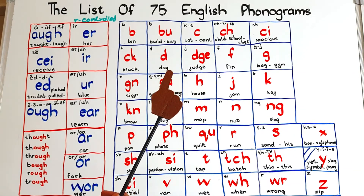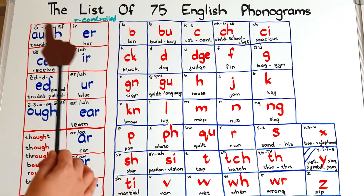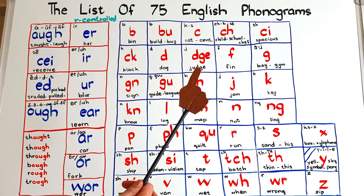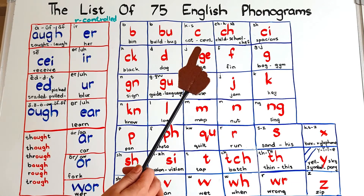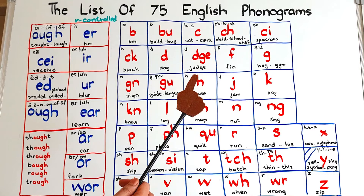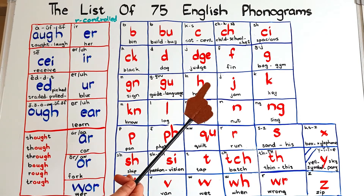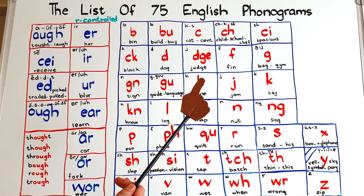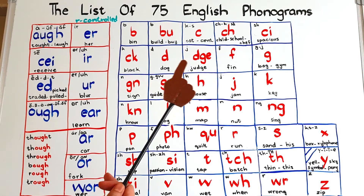Hi there, welcome to Homeschooling with Hira. Hope everyone is well. In today's video I'm going to complete the list of 75 English phonograms. This is Part 2. In Part 1 I told you about the 25 phonograms that are used to give the vowel sounds, and in this video I shall tell you about some consonant and vowel combinations. If you haven't watched Part 1, the link is in the description box.